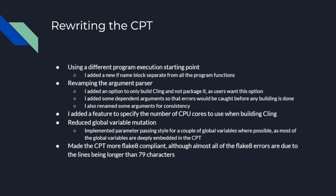I also added a feature to specify the number of CPU cores to use when building Cling, and I reduced global variable mutations by using parameter passing for a couple of global variables where possible. Most of the global variables are pretty deeply embedded in CPT, so any major rewrite would definitely have been pretty difficult and likely would have caused quite a few crashes.